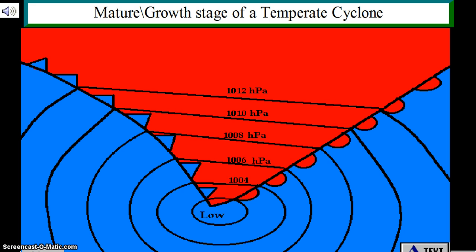The mature or growth stage of a temperate or mid-latitude cyclone. A cold front develops where the cold air pushes into the warm air. A warm front develops where the warm air pushes into the cold air.